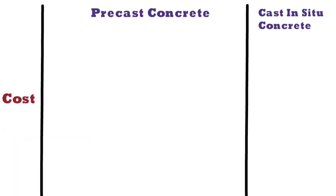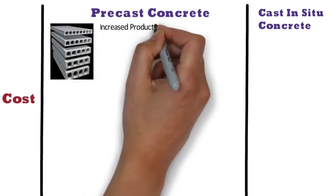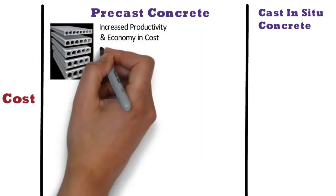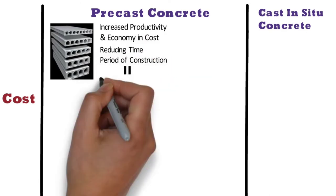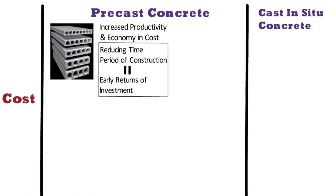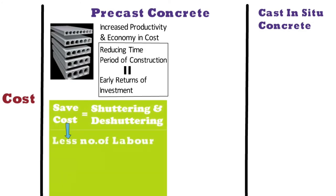In case of precast concrete construction, similar types of components are produced fast, resulting in increased productivity and economy in cost. This reduces the time period of construction, which can be beneficial for early returns on investment. In precast construction, you can save the cost of on-site shuttering and deshuttering, and it requires less number of labours. In precast construction, pre-stressing is done,